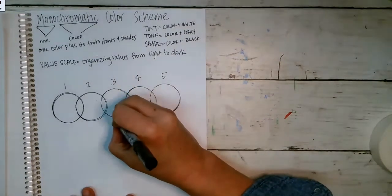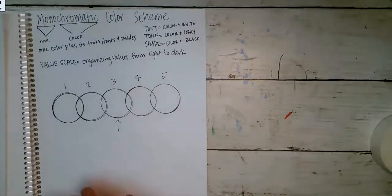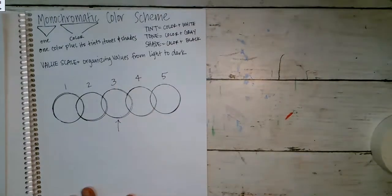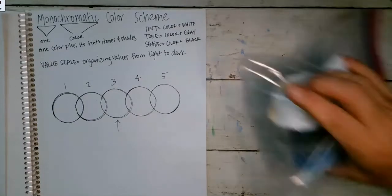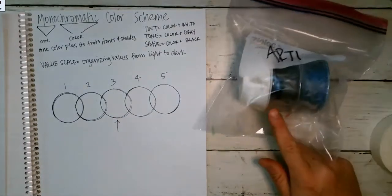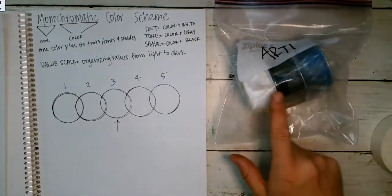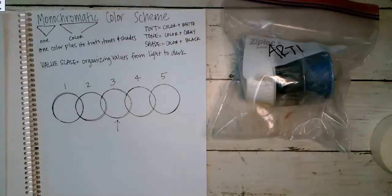Now we're going to number these: one, two, three, four, five. The middle one is three, right? So that's the middle. In our kit we were given some paint — some of you have blue and black and white, and some of you have red and black and white, or maybe magenta.